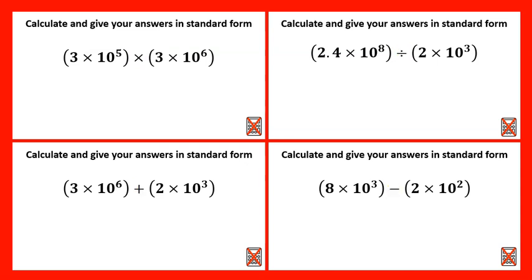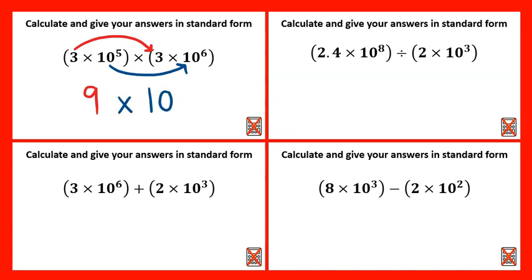The quickest way to multiply with standard form is to multiply the number by the number. Three times three is nine. Then for the powers, because the base numbers are the same we can use the multiplying rule for indices where we just add the indices together. So this would be nine times ten to the power of five plus six, which is eleven.